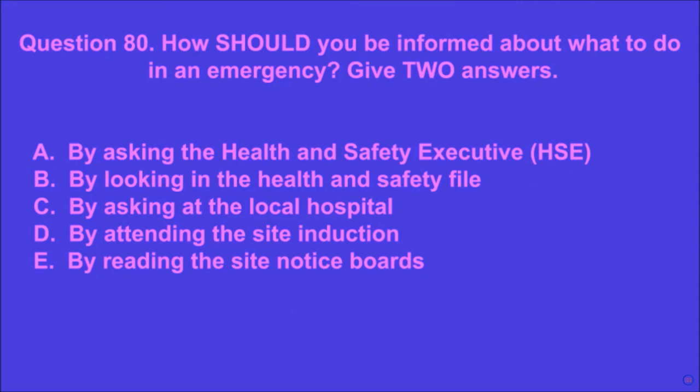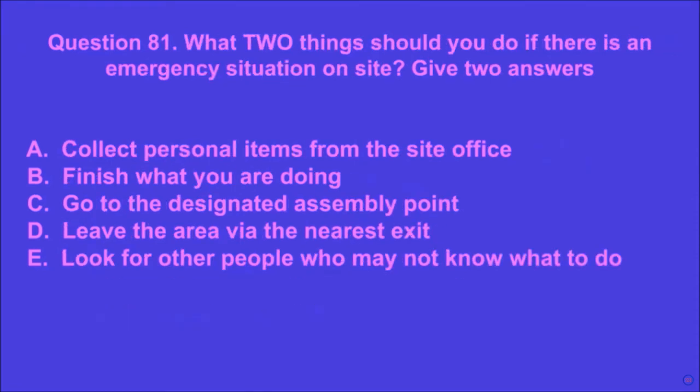Question 80: How should you be informed about what to do in an emergency? Give two answers. A: by asking the HSE, B: by looking in the health and safety file, C: by asking at the local hospital, D: by attending the site induction, E: by reading the site notice boards. D and E are the correct answers.